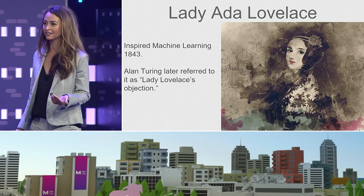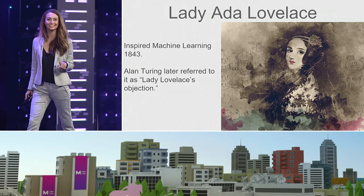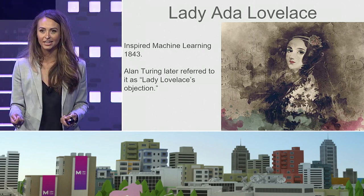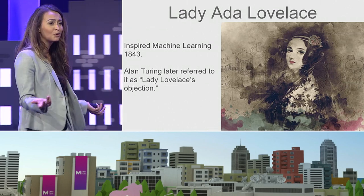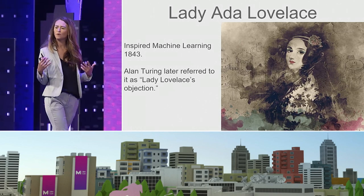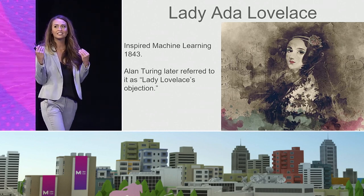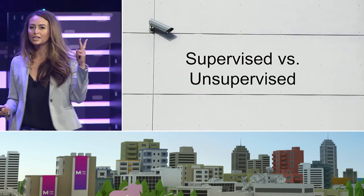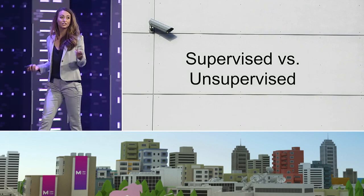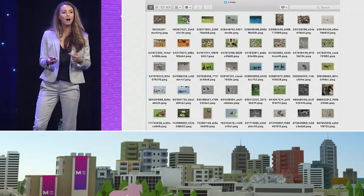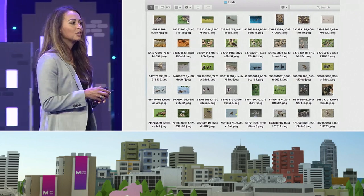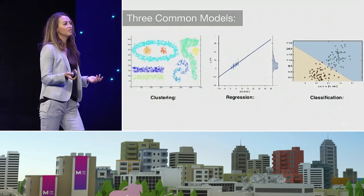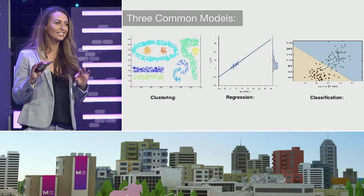Machine learning has been around for a really long time, going through ebbs and flows. One of my favorite facts is that it was actually inspired by a woman — Lady Ada Lovelace. In 1843 she was at a party in England where Alan Turing was as well, discussing the analytical engine, a mechanically operated computer for math. She basically said this is cool but it's not showing us anything we don't already know — it's not giving us insights. Turing referred back to this for decades as Lady Lovelace's objection. There are two types of machine learning: supervised, which uses labeled training data you feed to the model, and unsupervised, which uses non-labeled data that the model clusters into groups.